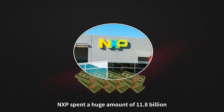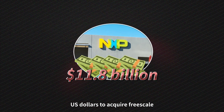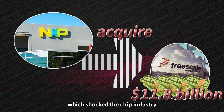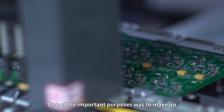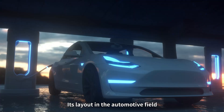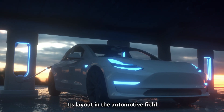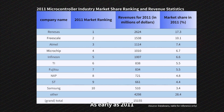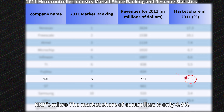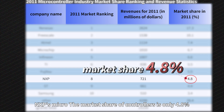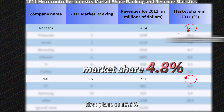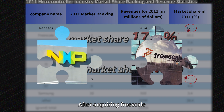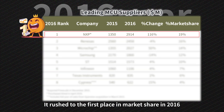NXP spent a huge amount of $11.8 billion USD to acquire Freescale, which shook the chip industry. One of the important purposes was to make up for its shortcomings in processors and realize its layout in the automotive field. As early as 2011, NXP's microcontroller market share was only 4.8%, far lower than Renesas' first place at 17.3%. After acquiring Freescale, it rushed to first place in market share in 2016.